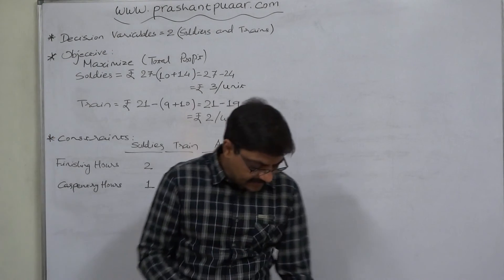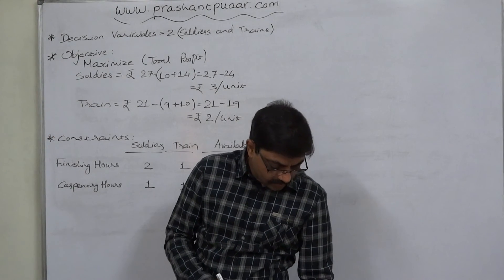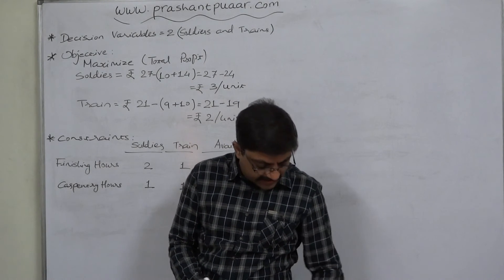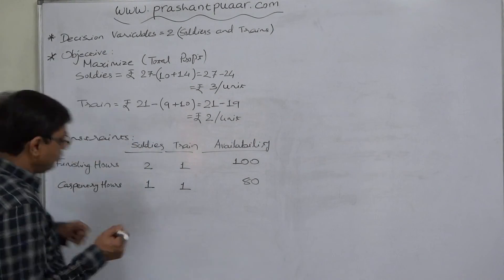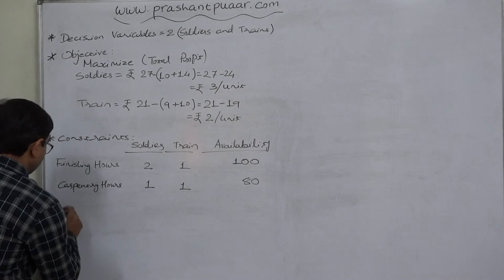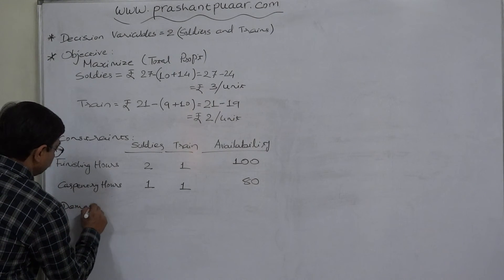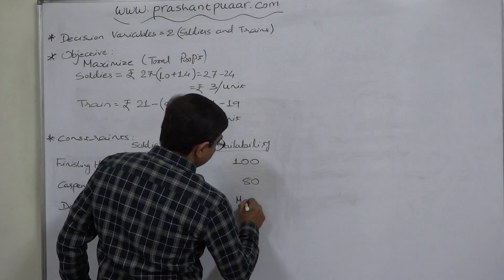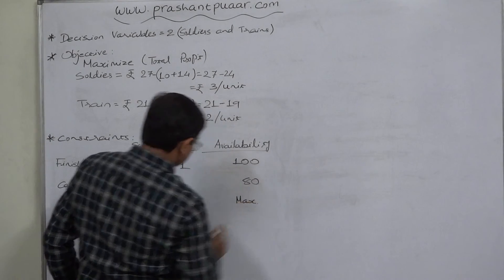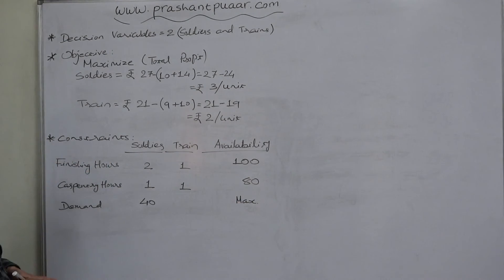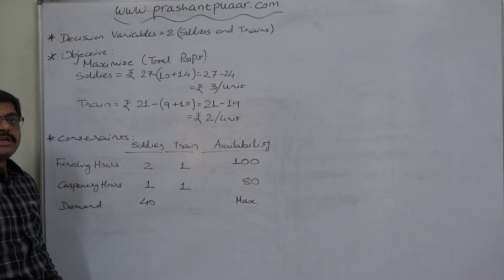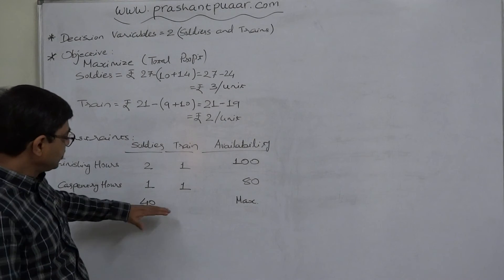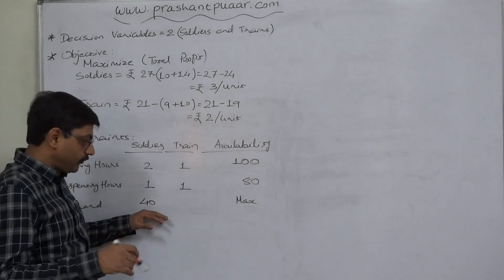The last constraint is a demand restriction: demand for trains is unlimited, but at most 40 soldiers can be sold. So we cannot manufacture more than 40 units of soldiers per week — either exactly 40 or less than 40.